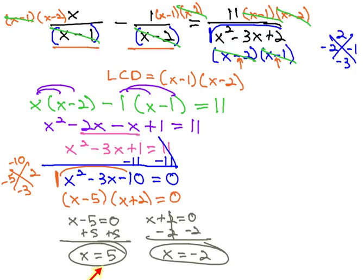Let's first check the 5. 5 minus 1 is 4, and 5 minus 2 is 3. Neither factor is 0. This tells us the 5 is an acceptable solution.